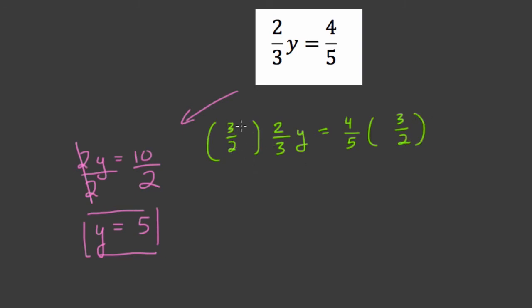3 halves times 2 thirds is 6 over 6, it's just 1. And we have y, and on the right side we have 12 over 10. And this is our answer. We can reduce it, though. We can divide both numerator and denominator by 2 and get 6 over 5.